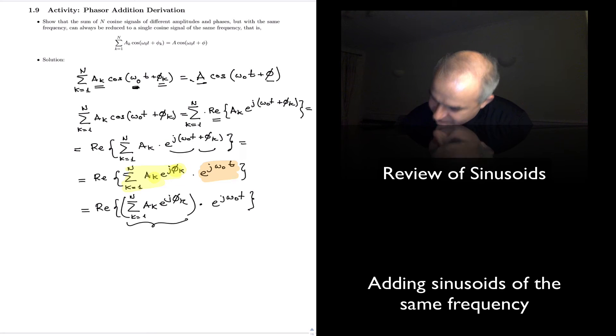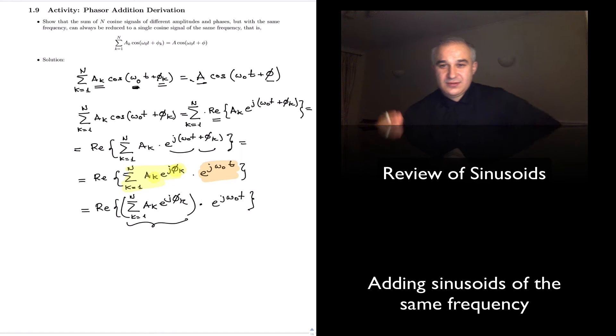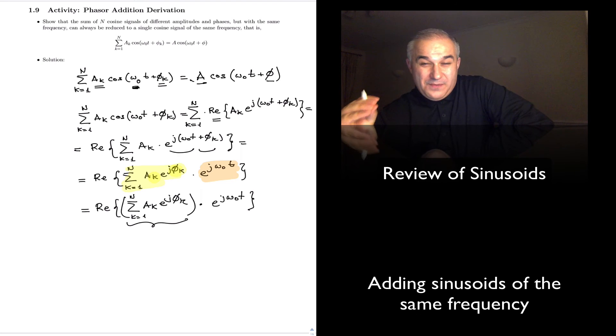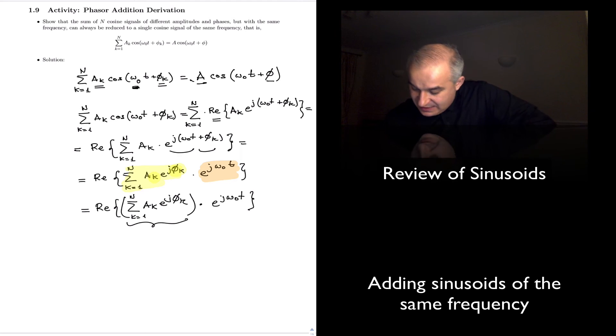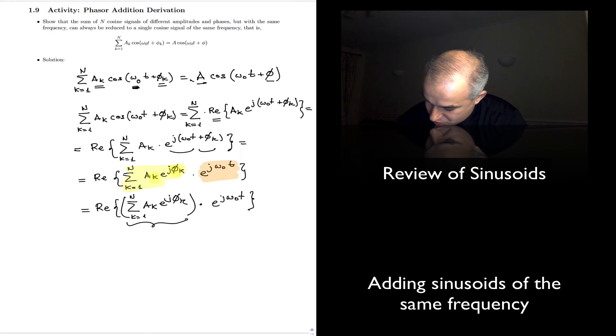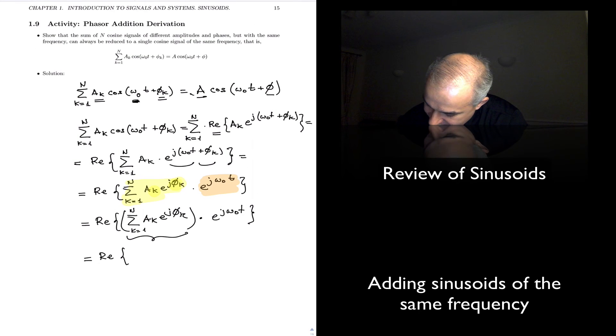And the output of this, when you add, you perform this phasor addition, is just a particular amplitude and a particular phase. So, you work that out, you're adding complex numbers in polar form, what do you get?